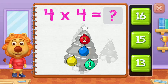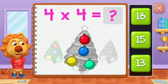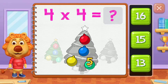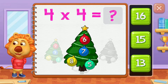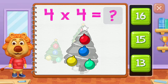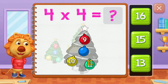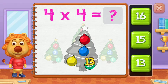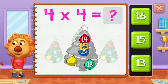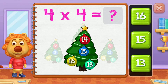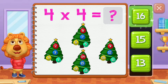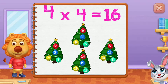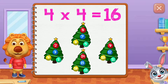One, two, three, four, five, six, seven, eight, nine, ten, eleven, twelve, thirteen, fourteen, fifteen, sixteen. Four groups of four equals sixteen.